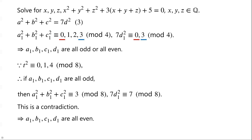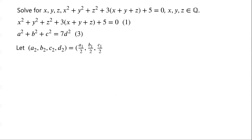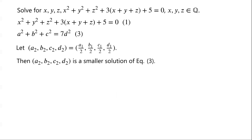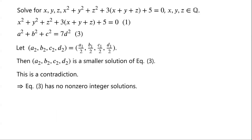So a1, b1, c1, and d1 are all even. Now we let a2, b2, c2, d2 equal a1 over 2, b1 over 2, c1 over 2, and d1 over 2. Then (a2, b2, c2, d2) is a smaller solution of equation 3 — a contradiction. This implies that equation 3 has no non-zero integer solutions. So equation 1, and therefore the original equation, have no rational solutions.